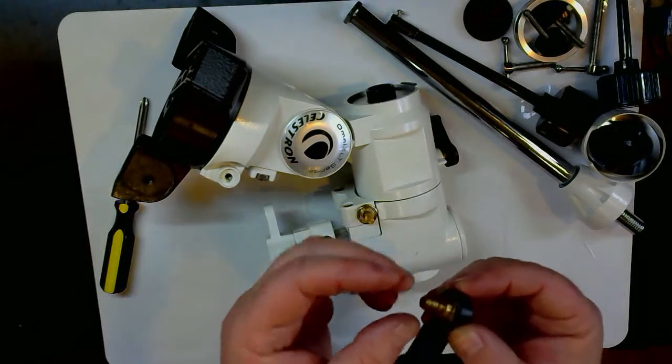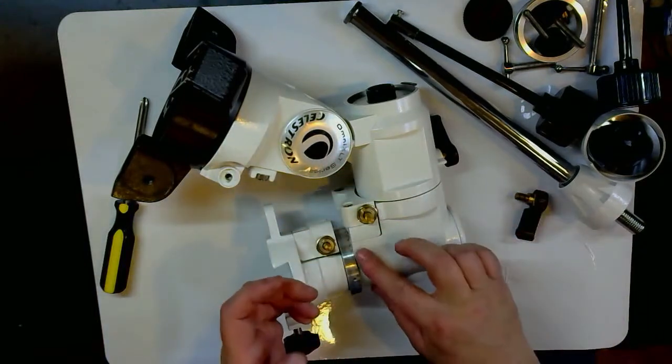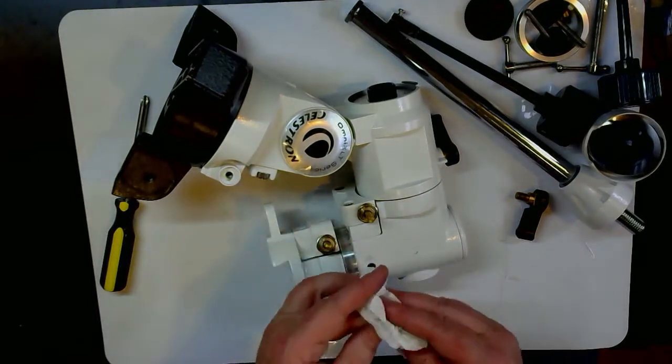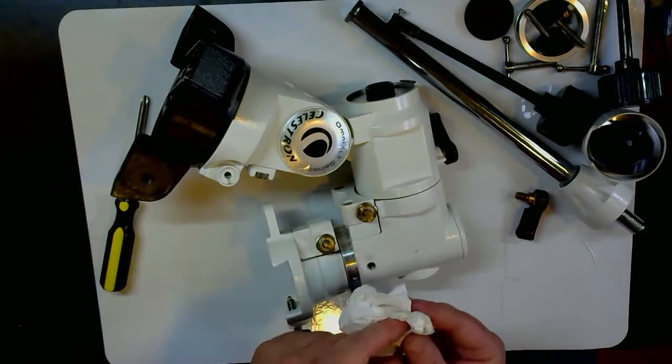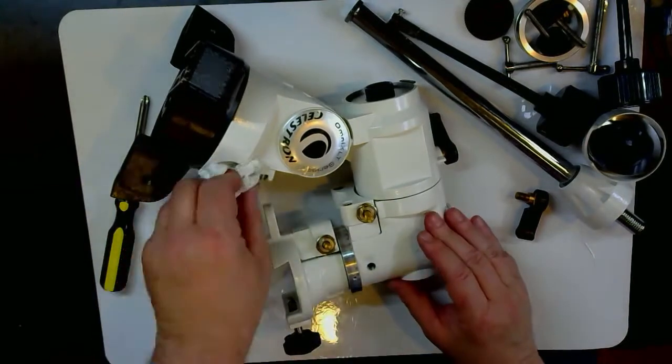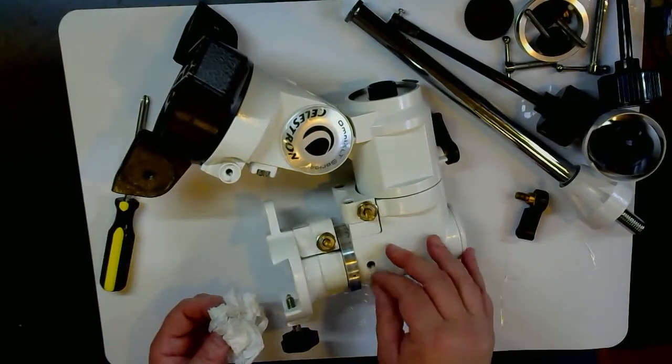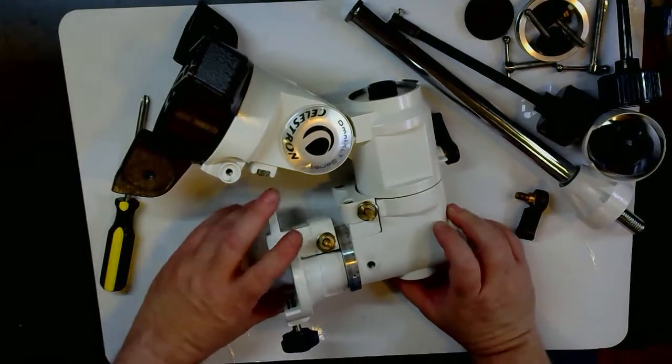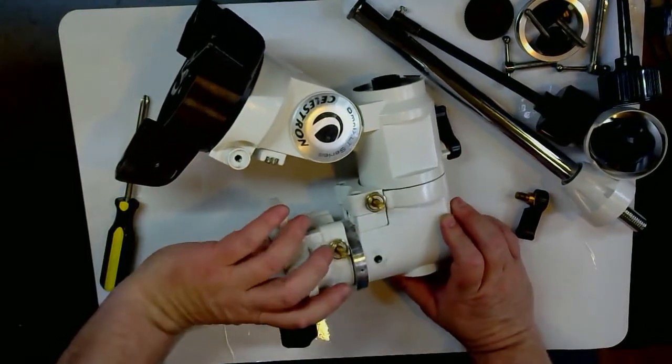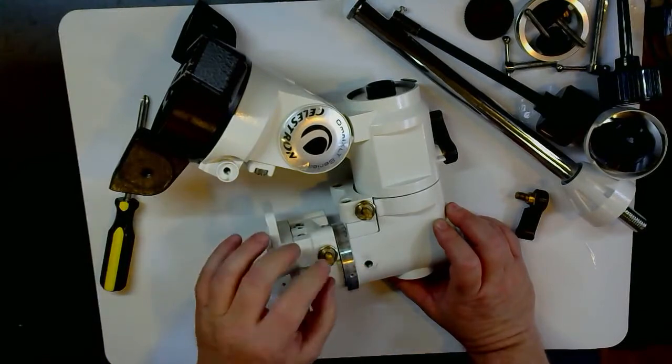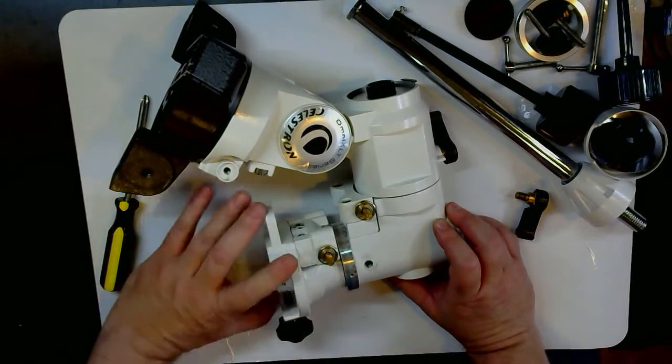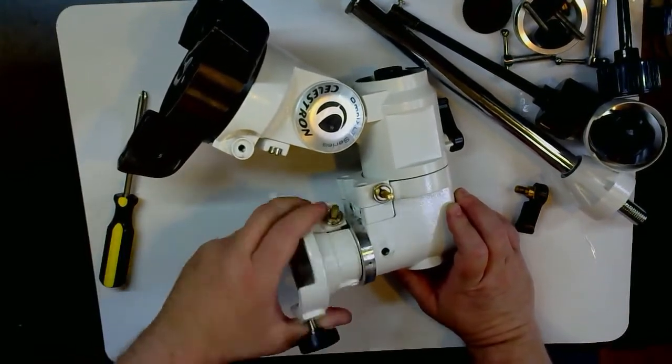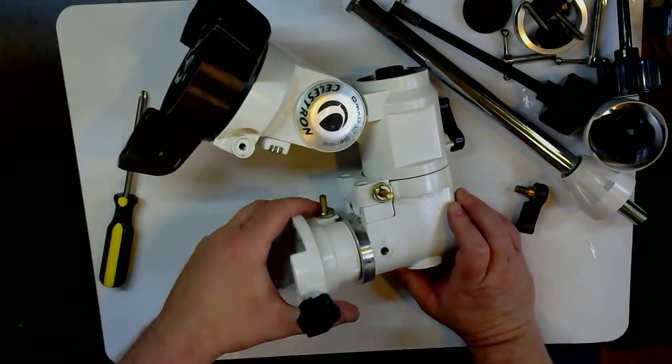The grease that's inside these assemblies is a very, very heavy grease that's used by the company Synta, which is the company that basically makes this for Celestron, the Chinese company. They use this very heavy grease - it's almost like molasses. The reason they use that is because that heavy grease fills in voids and gaps in the assembly and makes it feel like the assembly is much sturdier than it really is. It prevents them from having to machine things to the highest level, but it also makes things very sticky.